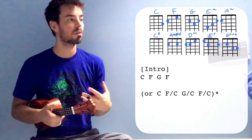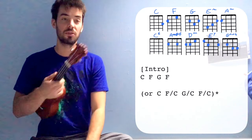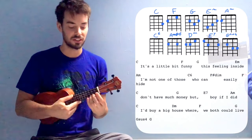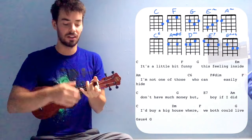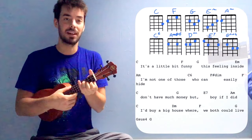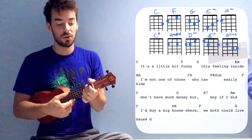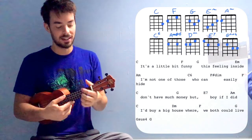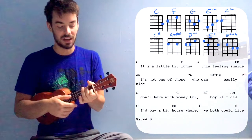First of all, an easy walk through the verse and the chorus. So, get your youths ready and a C ready. It starts on a C. It's a little bit funny, F, with the F. G, this feeling inside. And then E minor, side. A minor, not one of those C6 who can easily hide. F on the hide.